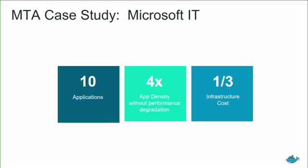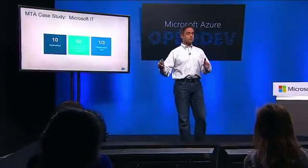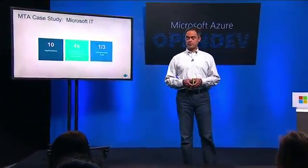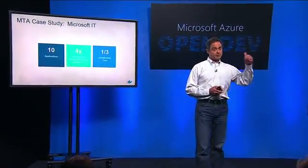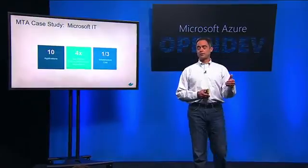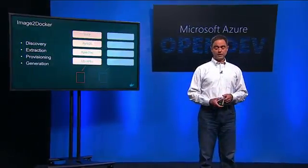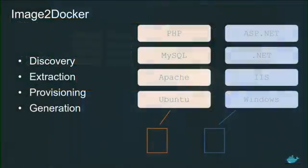Another public reference is Microsoft's own IT organization, with a .NET Windows application built on Windows Server 2003. Within five days, we modernized ten applications, containerized them, and put them on Azure under Docker Enterprise Edition management. The results were pretty stunning: we maintained performance and scalability while increasing app density by 4x and reducing infrastructure cost by a third. Many customers are asking for tools to help them get started on this journey, and Docker is excited to offer an open source tool called Image2Docker, which helps automate the discovery and modernization of applications.